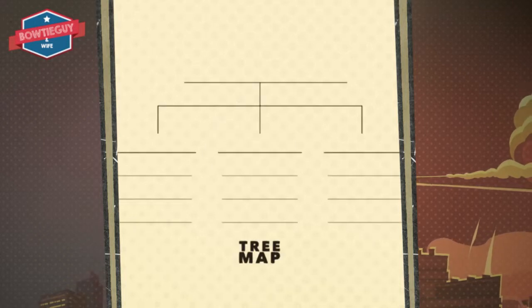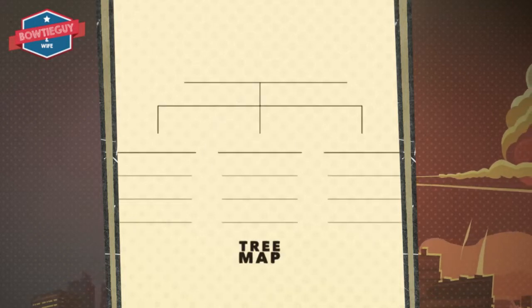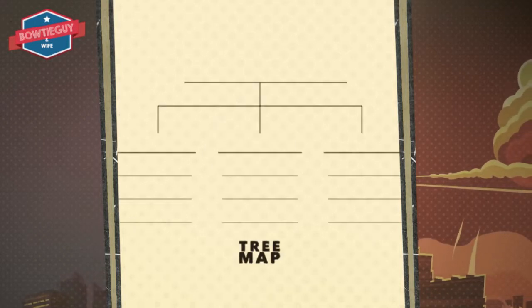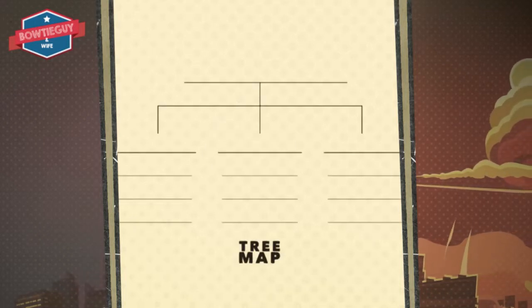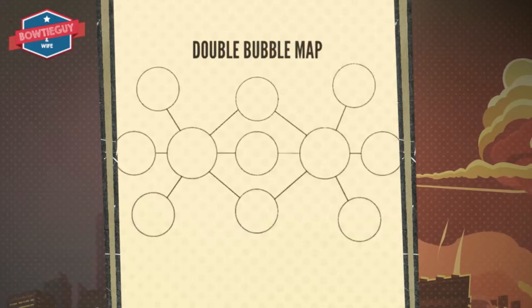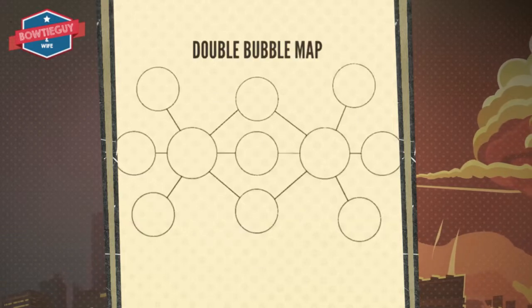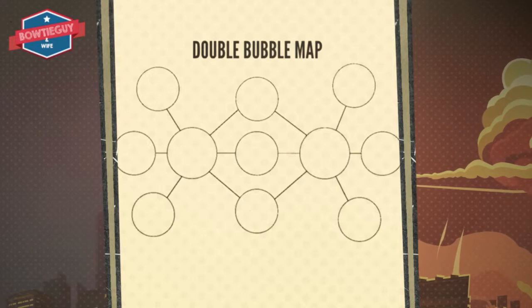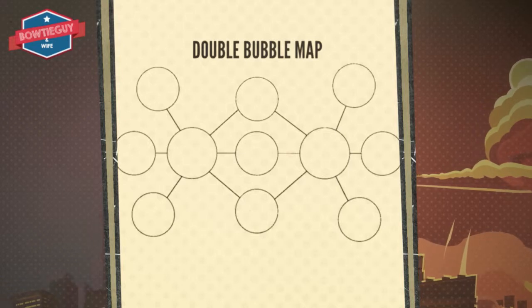A tree map provides opportunities to classify or to categorize. A double bubble map is a lot like a Venn diagram in the fact that you compare and contrast two differing topics.